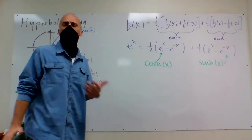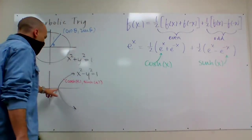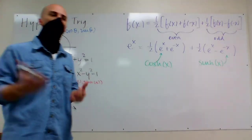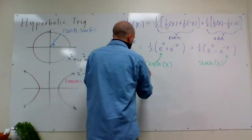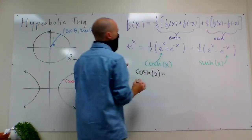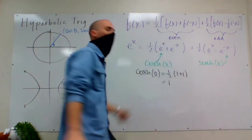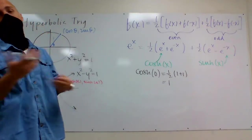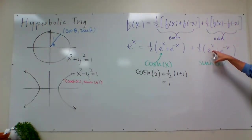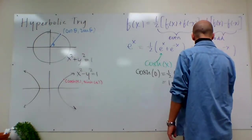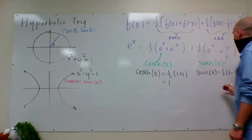In getting toward what this t represents, I want to talk about where they start. We know what happens at theta equals 0 on the circle — we start at (1, 0). So let's think about cosh(0). It's going to be one-half of (1 + 1), which is 1. That's comforting — cosine of 0 is 1, and cosh(0) is also 1. And sinh(0) will be one-half of (1 − 1) = 0.